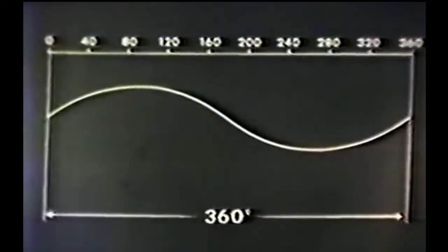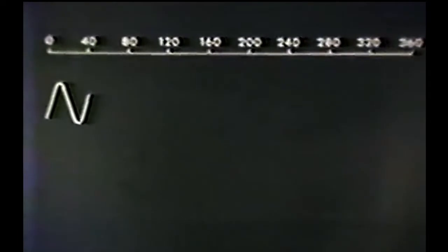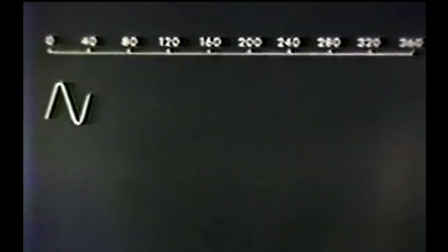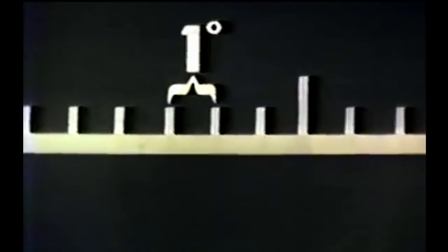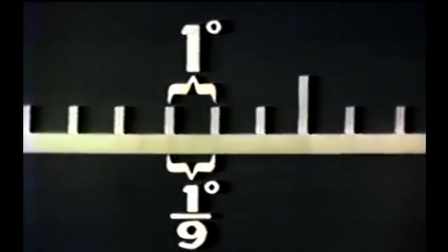In other words, by increasing the slope nine to one, the 135 cycle modulation in effect expands the scale, increasing the accuracy nine to one. The 15 cycle modulation must be retained for identification of the proper 40 degrees of scale. Thus, a single division on the bearing scale equals one degree to the 15 cycle modulation, but only one-ninth of a degree to the 135 cycle modulation.